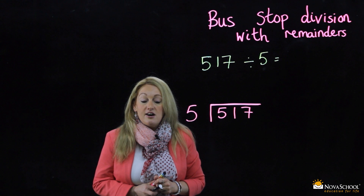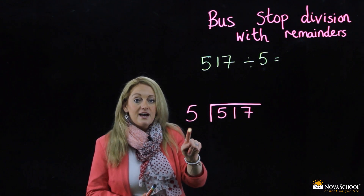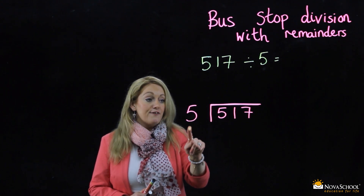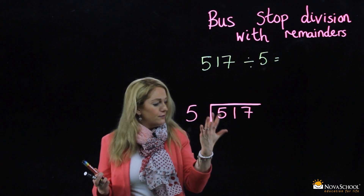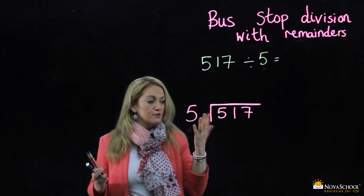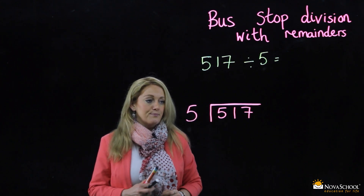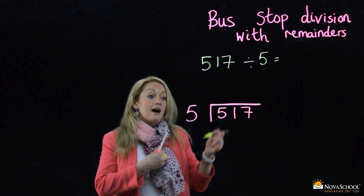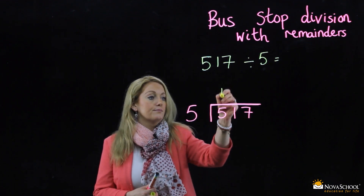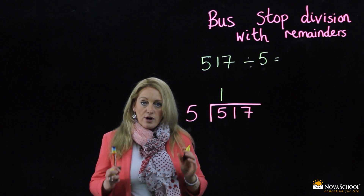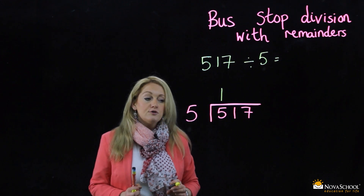Now, where do I start? I take my five and I see how many times the five goes into five. Five goes into five one time, so I place my one above the five. Let's see — are we okay so far? We are going to move on.